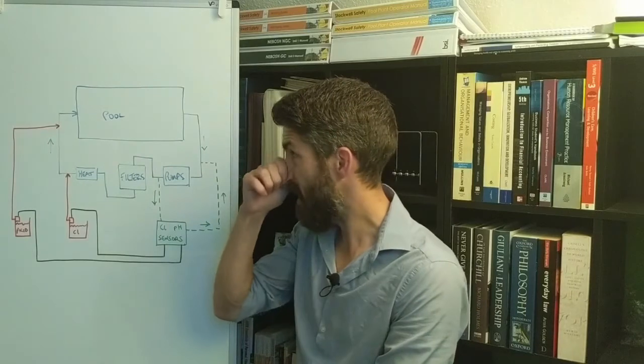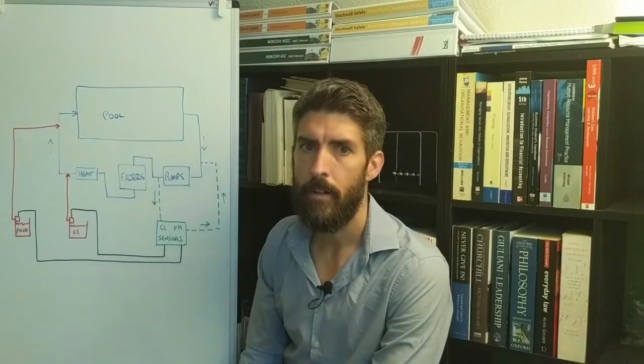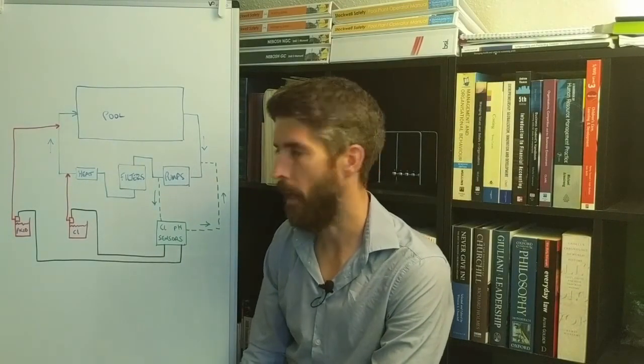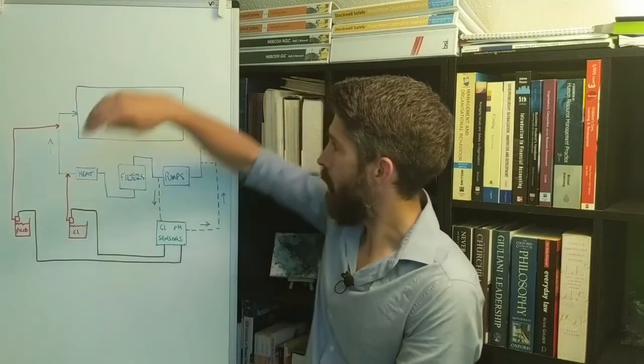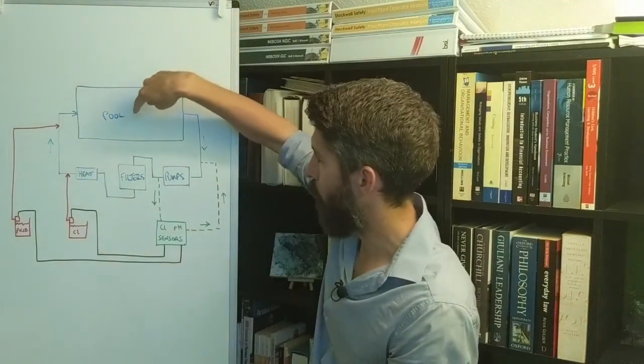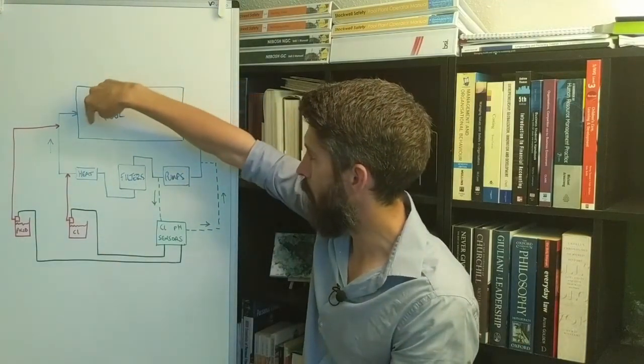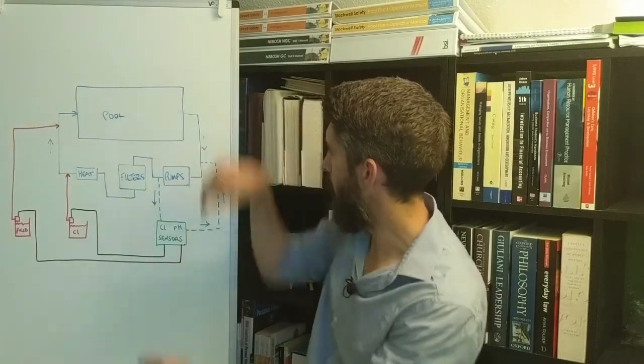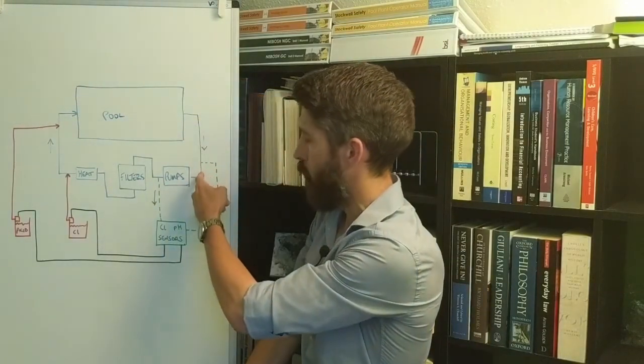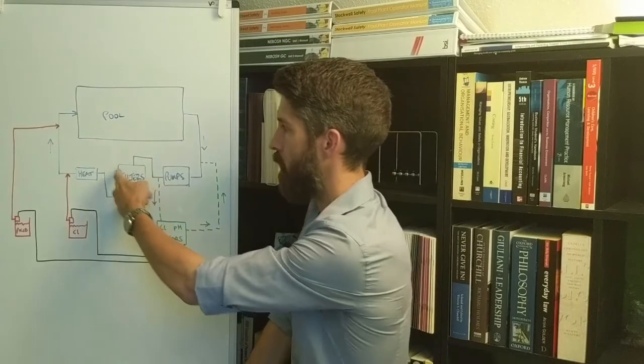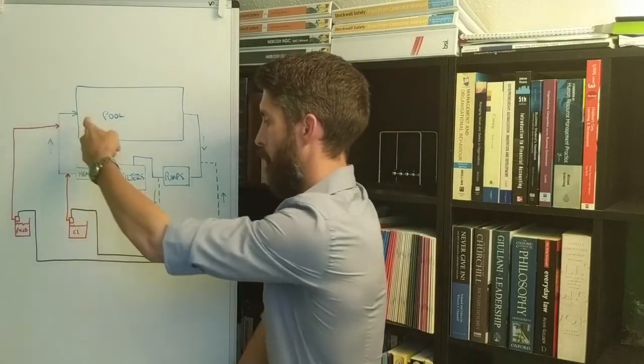So what I've got here is a simplified schematic of a pool plant system. So you've got the pool itself, inlets, pools coming in here, out here it goes round into pumps, filters, heating back to the pool.